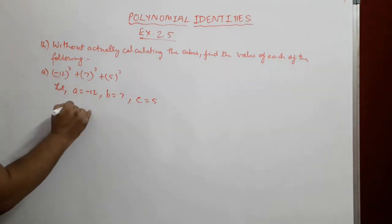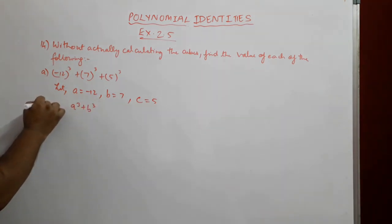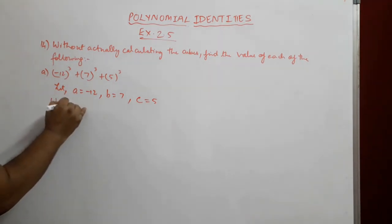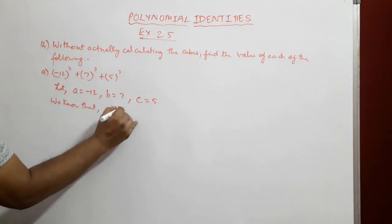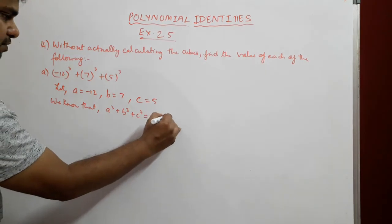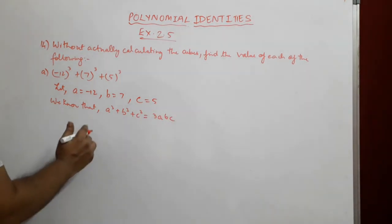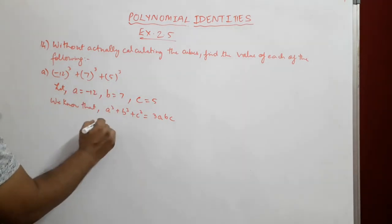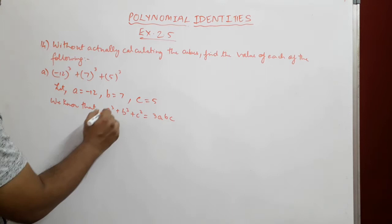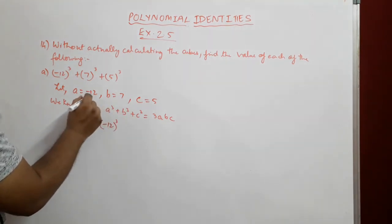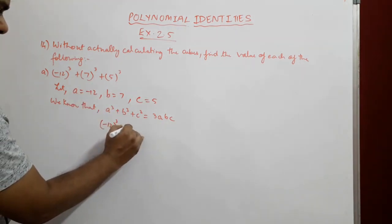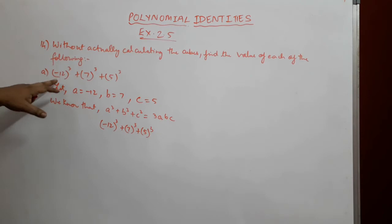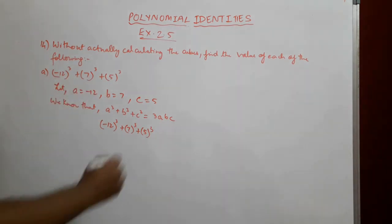We apply the identity: if a + b + c = 0, then a³ + b³ + c³ = 3abc. We verify: -12 + 7 + 5 = 0. So (-12)³ + 7³ + 5³ = 3 × (-12) × 7 × 5.